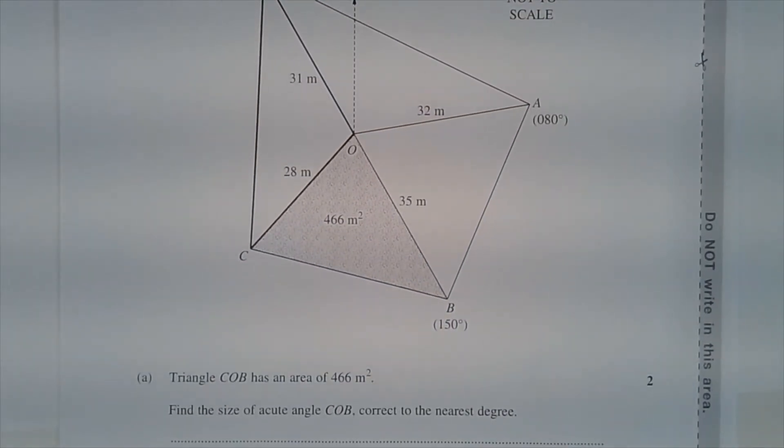Triangle COB has an area of 466 square metres. Find the size of acute angle COB, correct to the nearest degree.